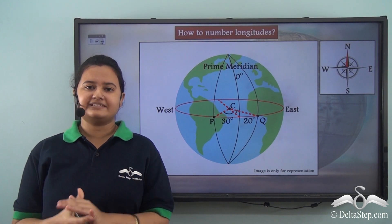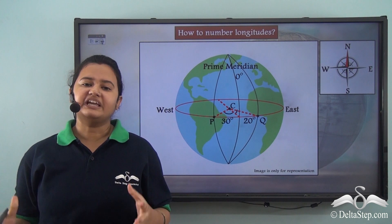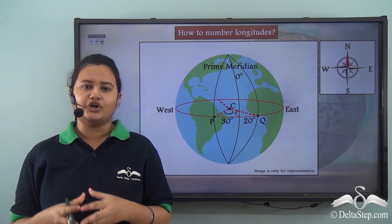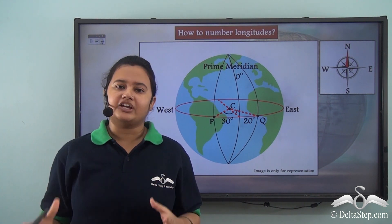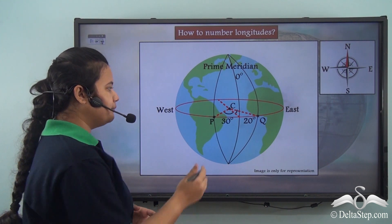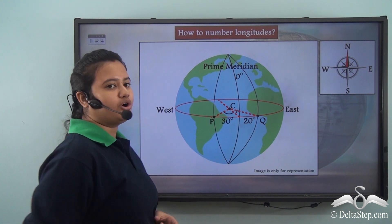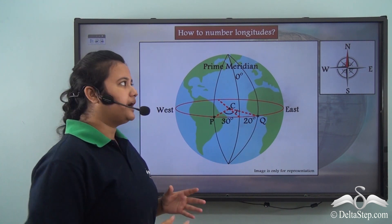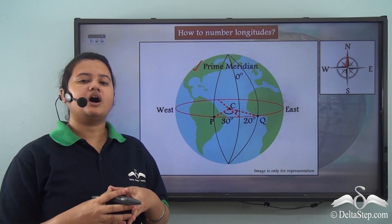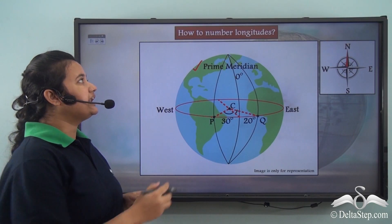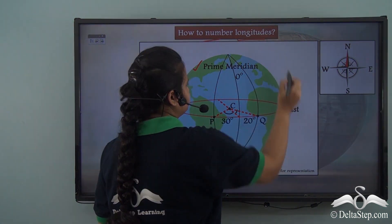In our previous lesson we understood the meaning of longitudes. Longitudes are angular distance of a point to the east and west of the prime meridian. Now we shall try to understand how we can number these longitudes.